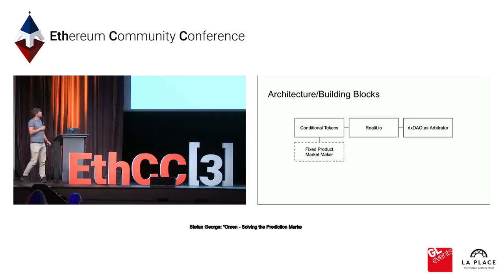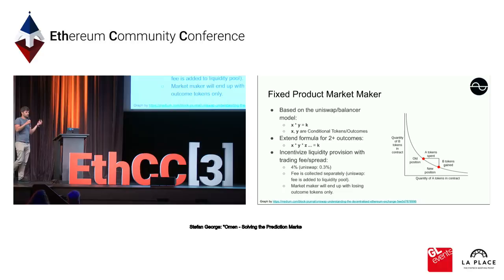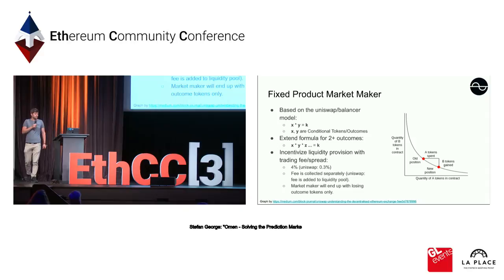The next question — and that's where OMEN makes a difference — is the market mechanism. We're using an automated market maker called the fixed product market maker. It's very simple, and pretty much all of you know and have probably used this market maker before because it's the same one used for Uniswap. It follows a simple formula where the supply of the two tokens being traded should always multiply to the same constant, and if you want to sell one for the other, you shift along this curve to get the amount of tokens you want in return.